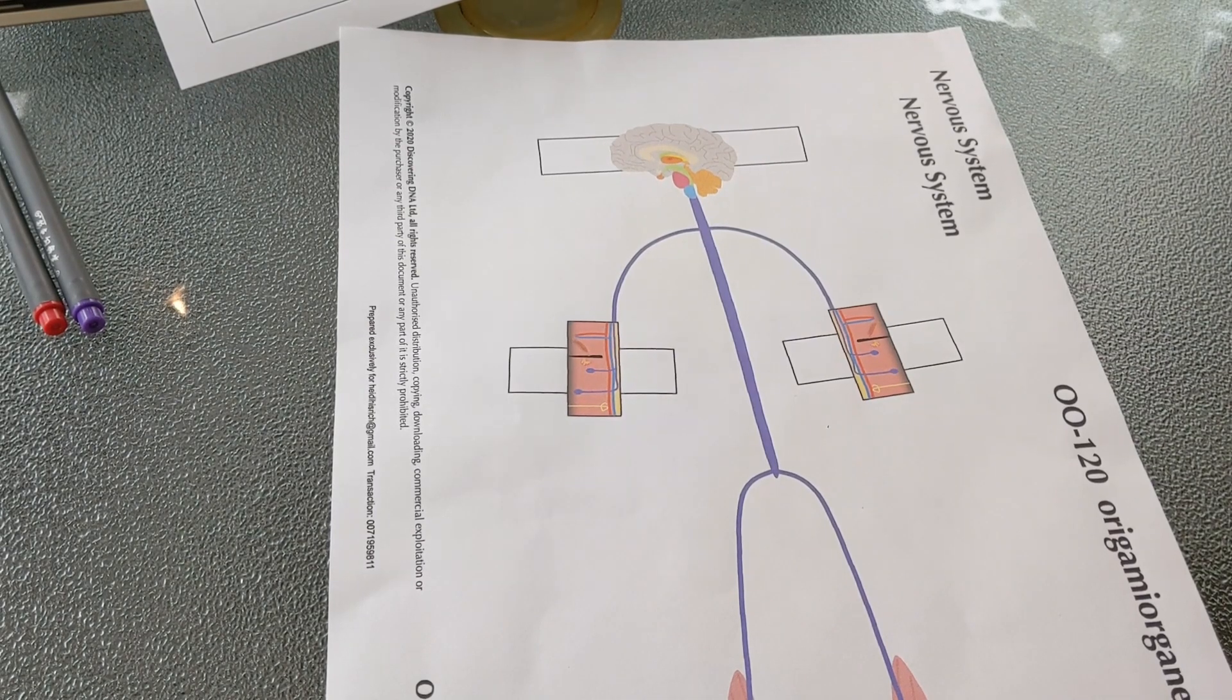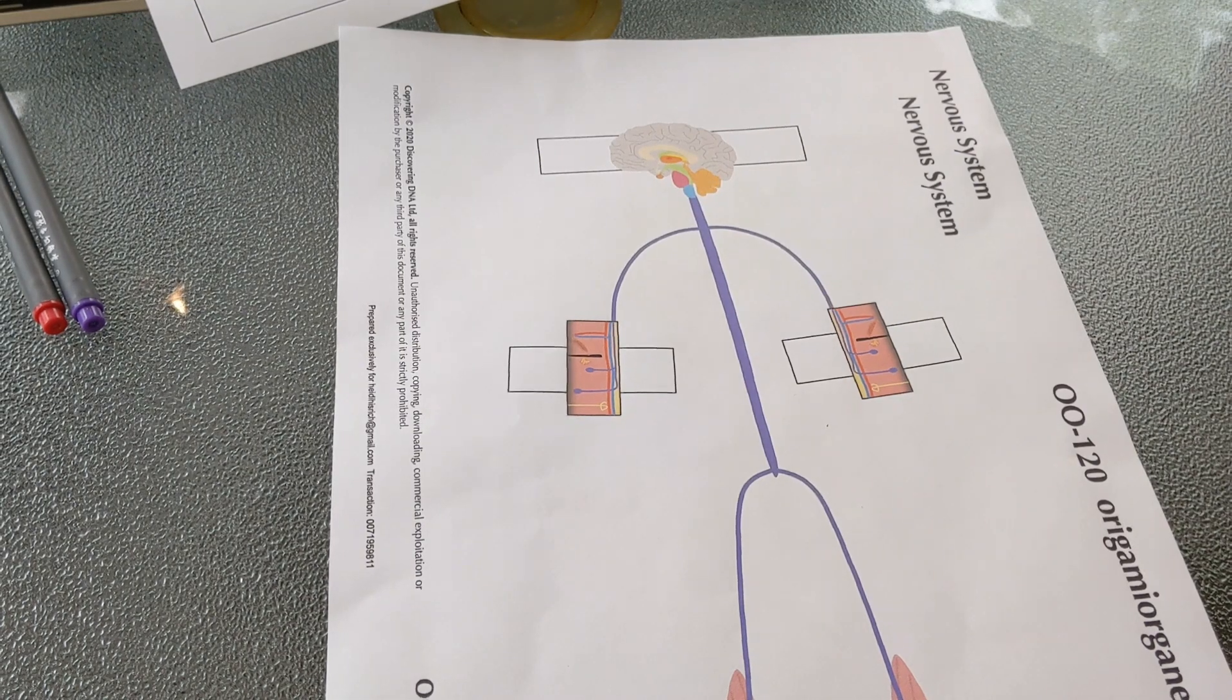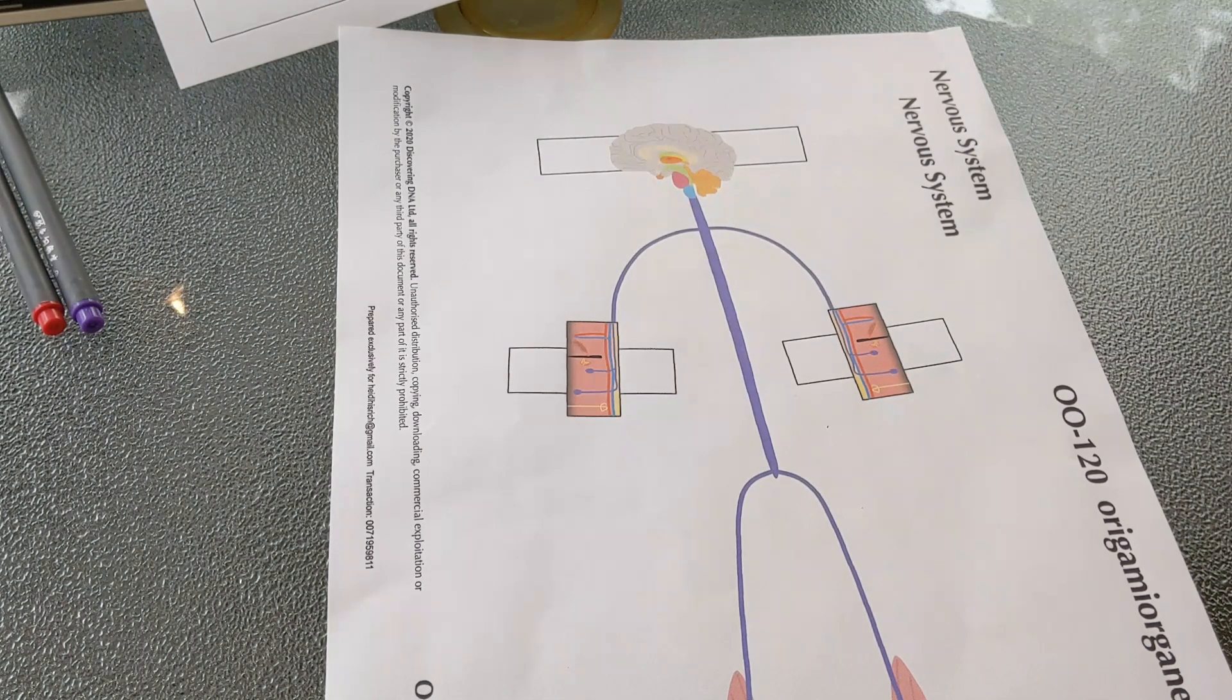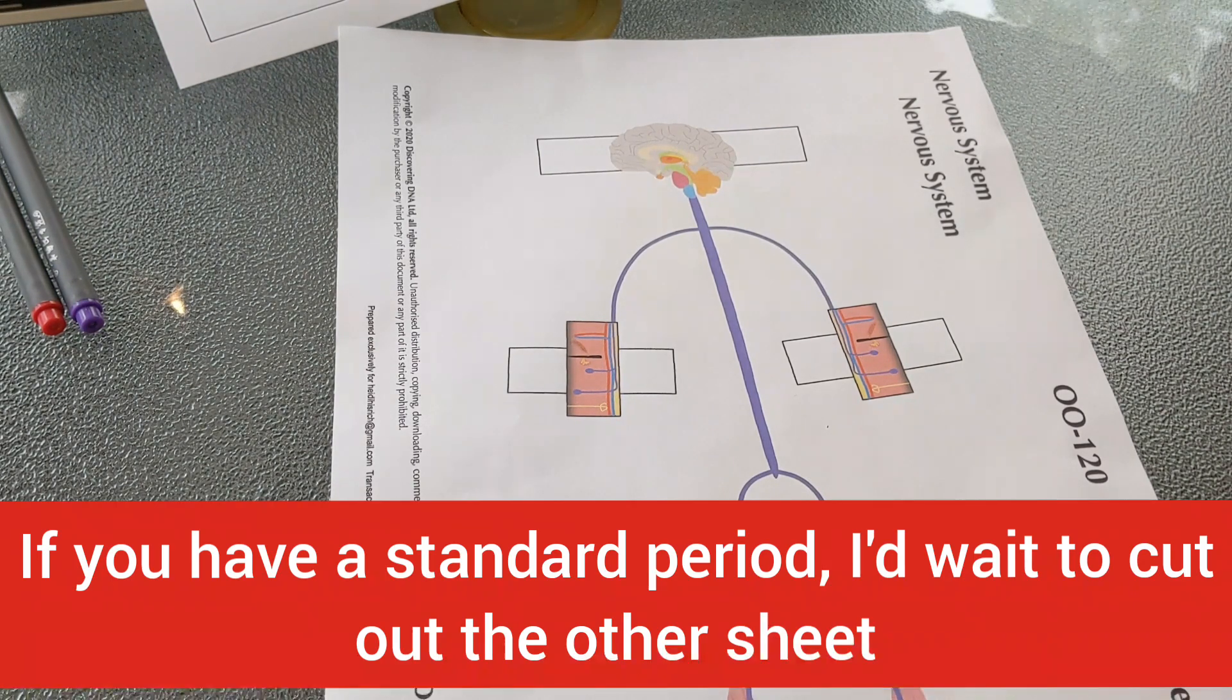I'll see how it goes with my actual students. The first thing for any origami organelles activity is to cut. After you've printed out the two pages of the template, you just want to start cutting. For my students, we are going to do the nervous system part which you see on the screen right now one day.